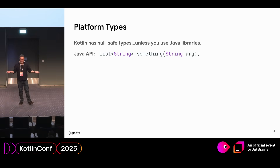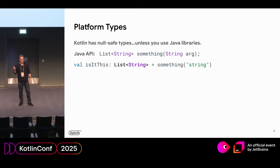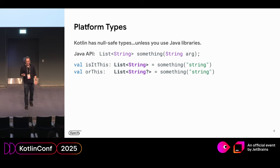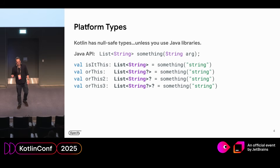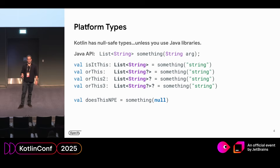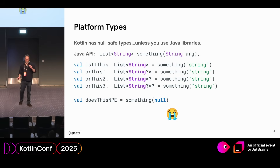You have a Java API that looks something like this. You don't know the nullness of any of the type components of that API. So when you call that from Kotlin, you don't know whether you're getting back a list of strings, a list of nullable strings, a nullable list of strings, or a nullable list of nullable strings. You have no idea whether this is going to throw a NullPointerException at runtime. Kotlin lets you guess — it lets you choose any of these things and doesn't complain. And then you end up having a bad time.